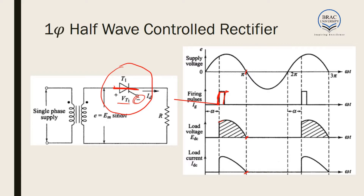We can control the firing angle, or alpha. We can make this firing angle anything between zero to 180 degrees. If we increase the firing angle, a lower portion of the input is mapped to the output. If we decrease the firing angle, a higher portion of the input is mapped to the output. So if alpha is low, V output will be high; if alpha is high, V output will be low. This is how we can control the output voltage using the firing angle.